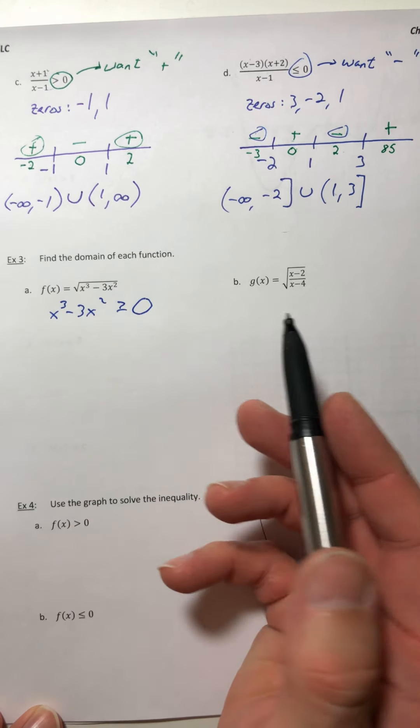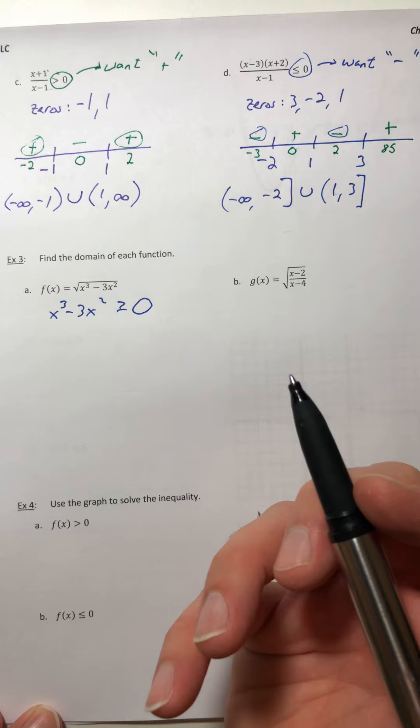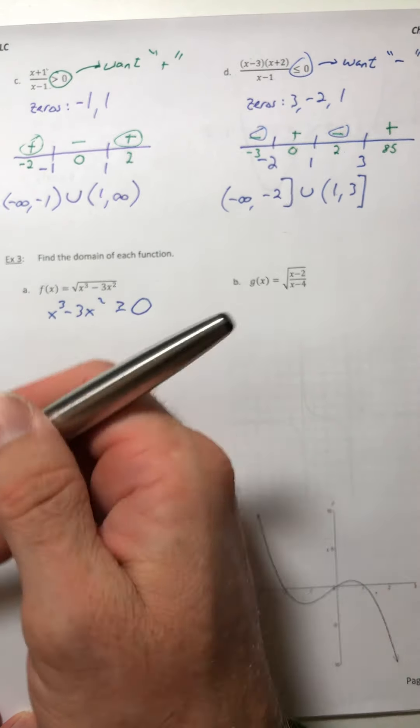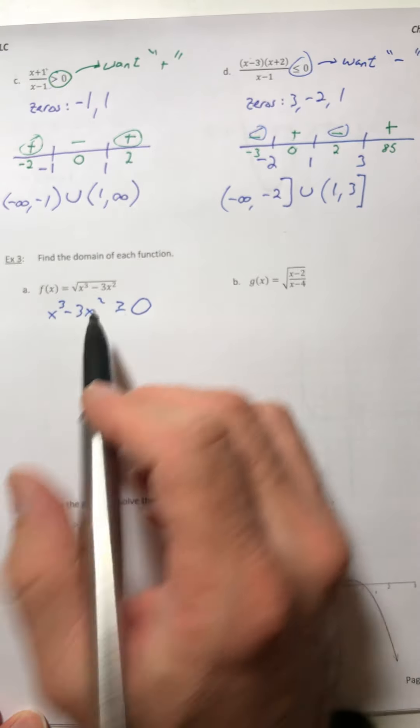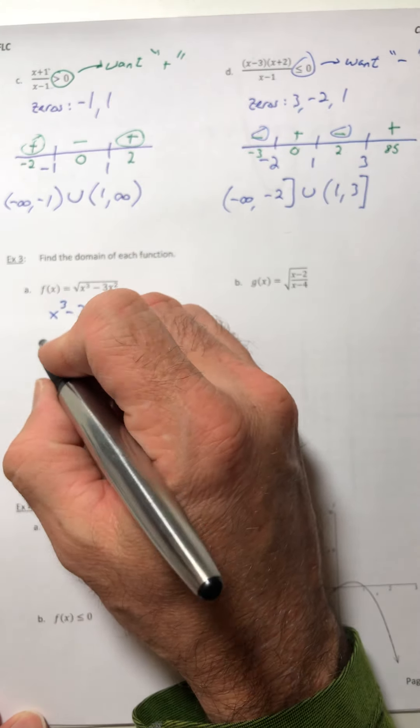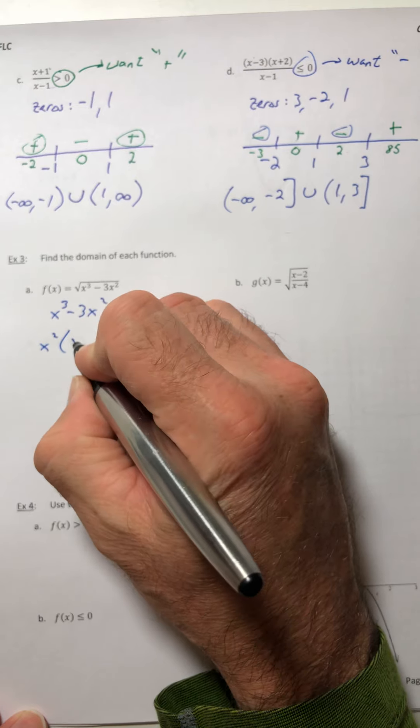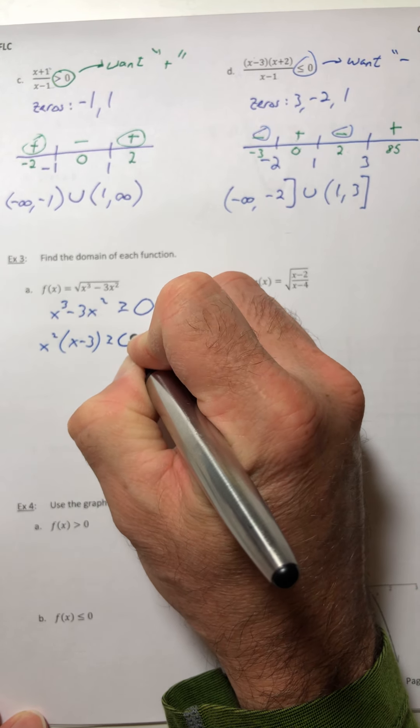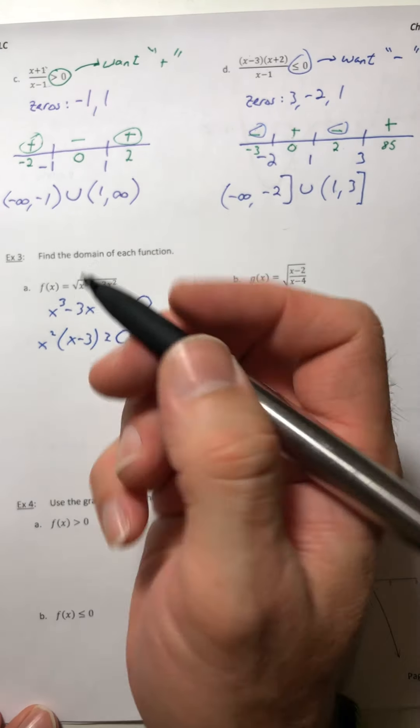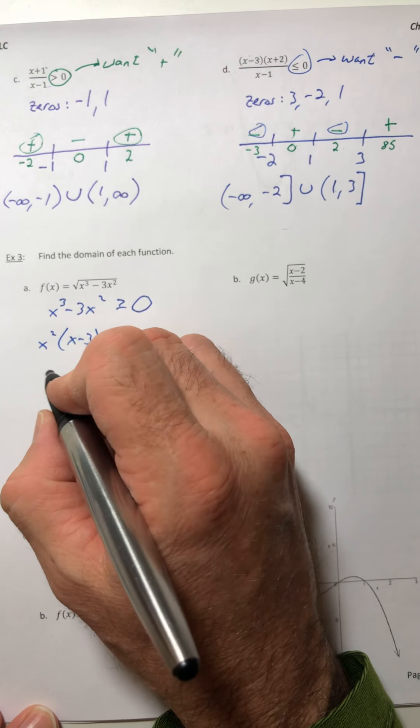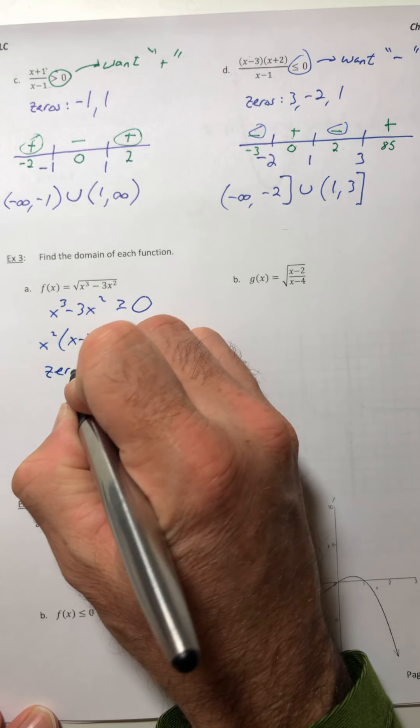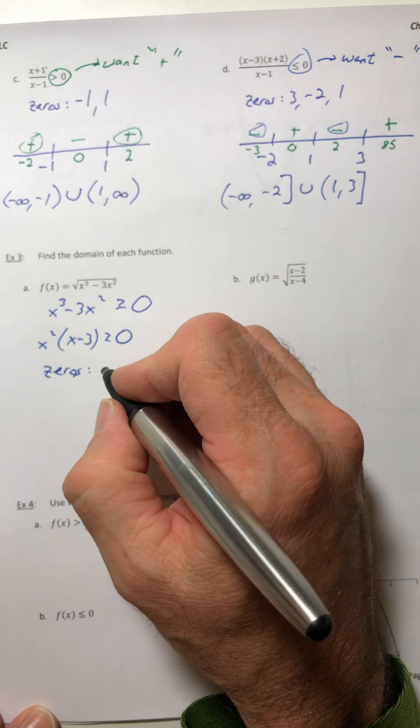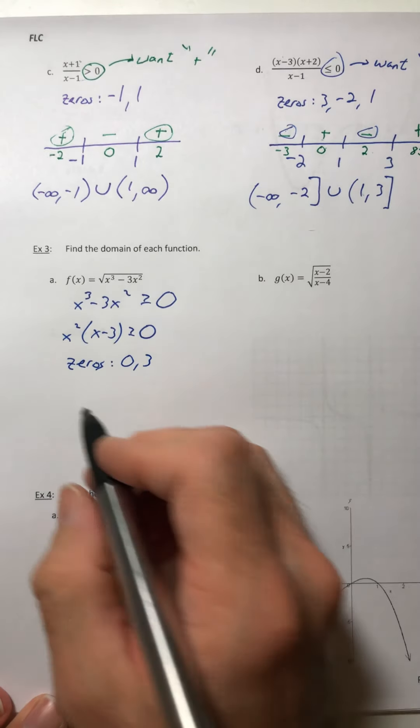Look at what you just set up. You just set up an inequality. So now you got to solve it using the techniques that we just did. This one though it's just not factored, so factor it. So I'll pull out an x squared and now you can get your zeros. So that would be 0 and 3.